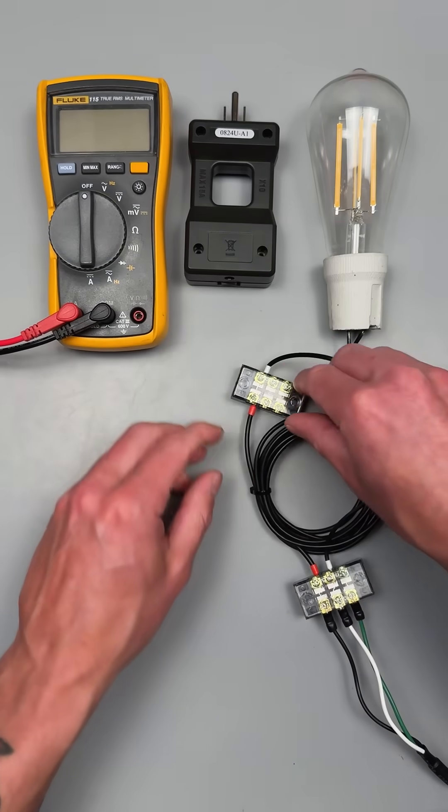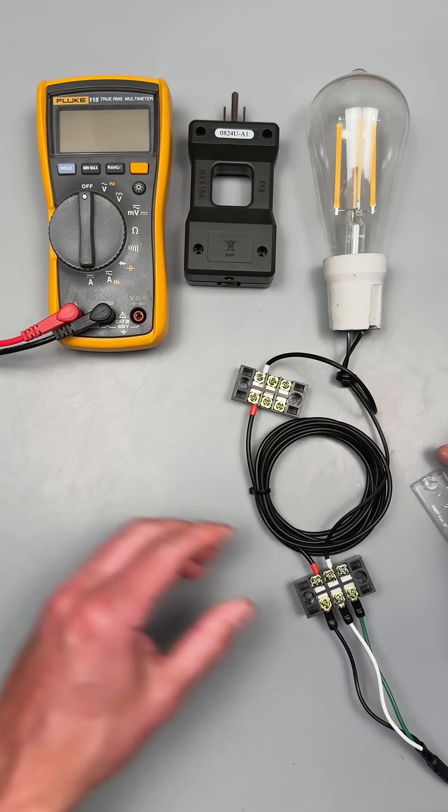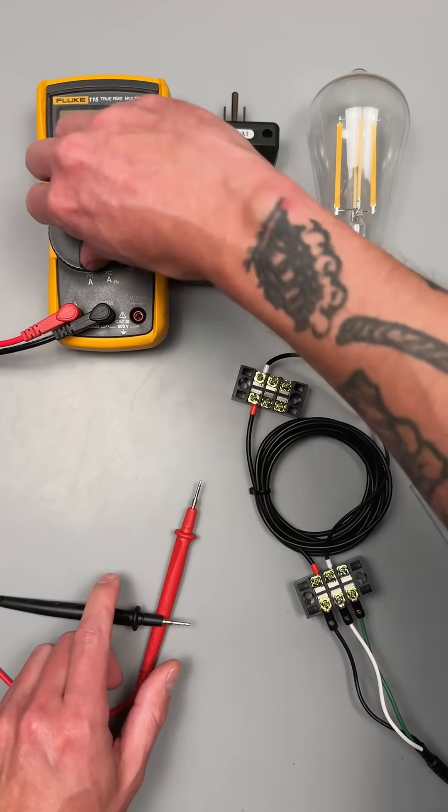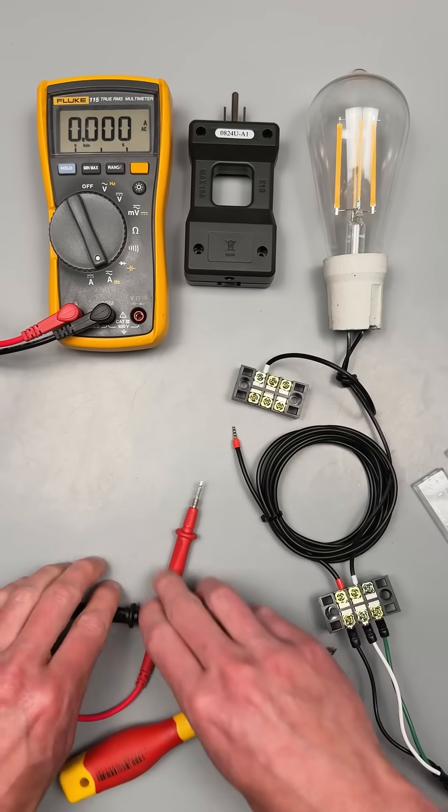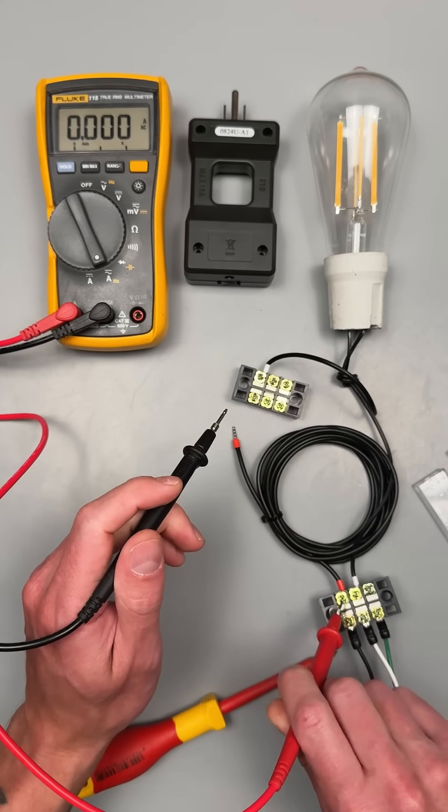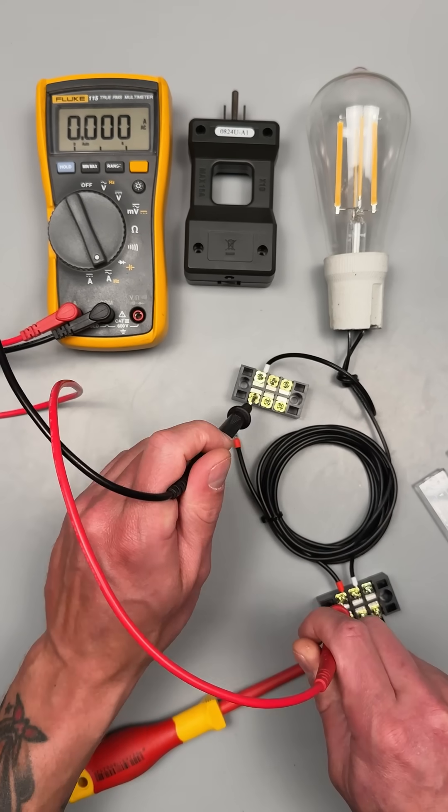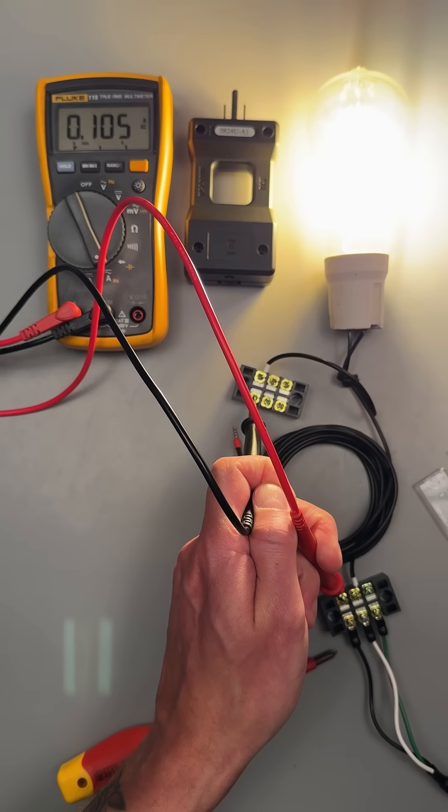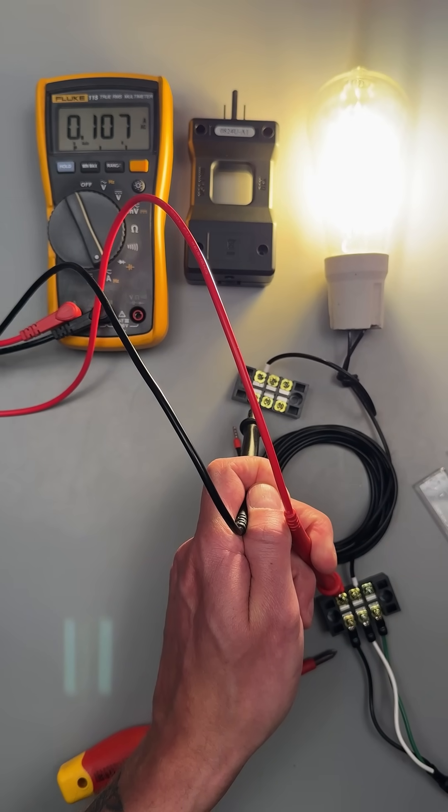Let's go ahead and take a look at what a reading would be like with an in-series amperage measurement and see how accurate our measurements were. You can see they were all pretty consistent on the times 10 setting. And what does our meter say? About 107 milliamps.